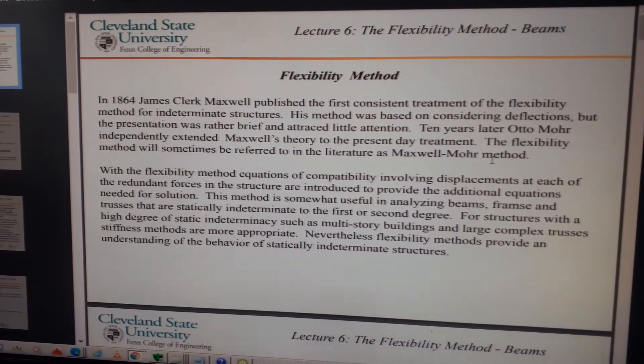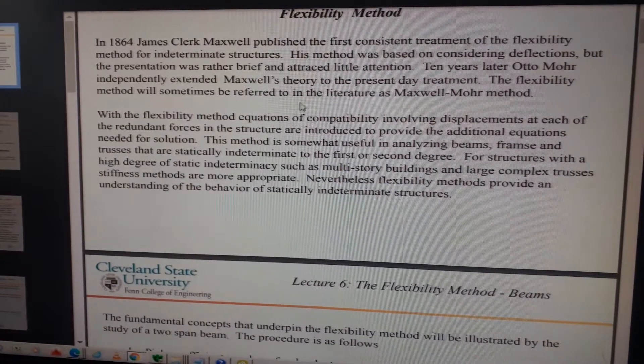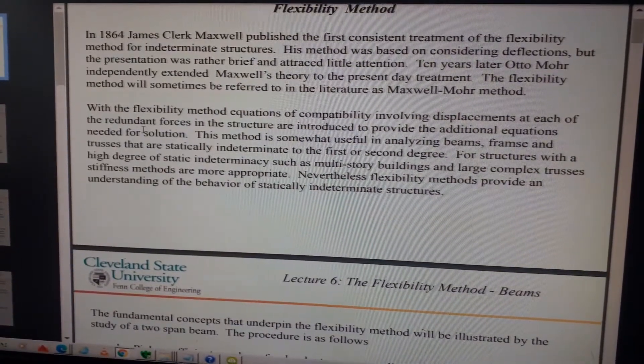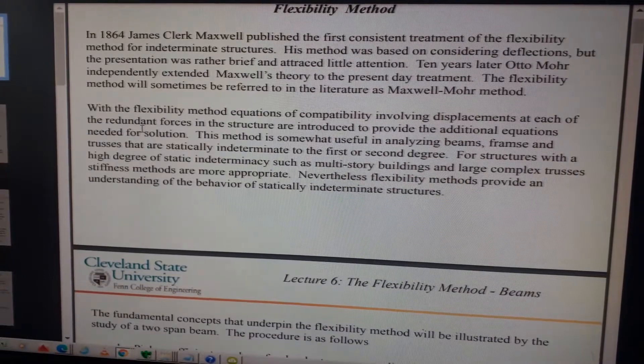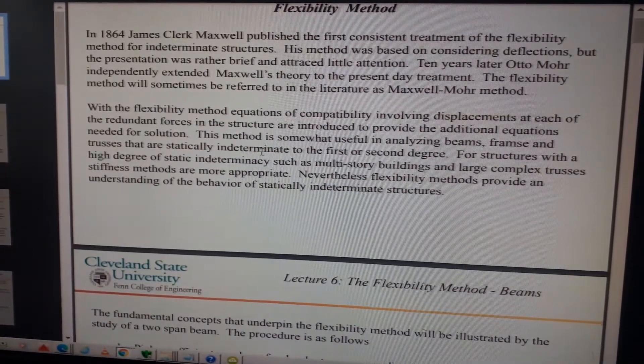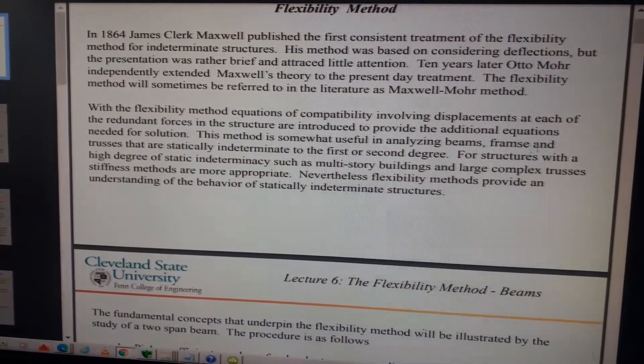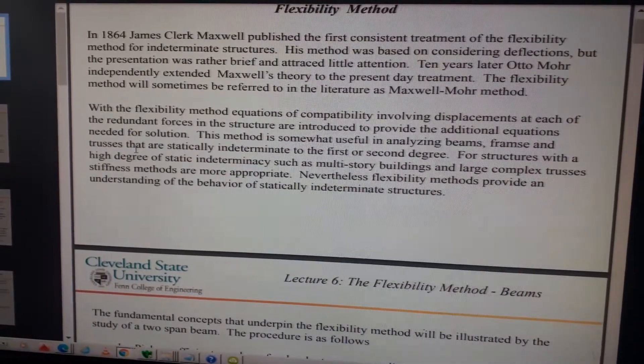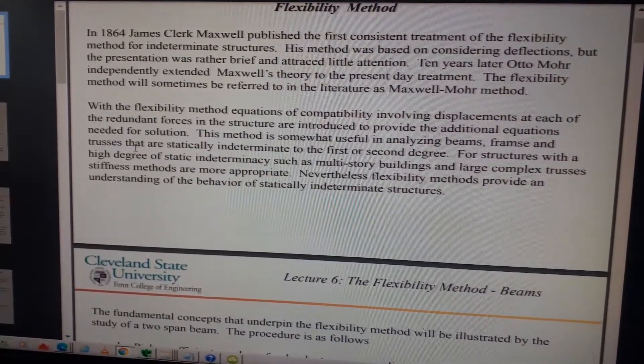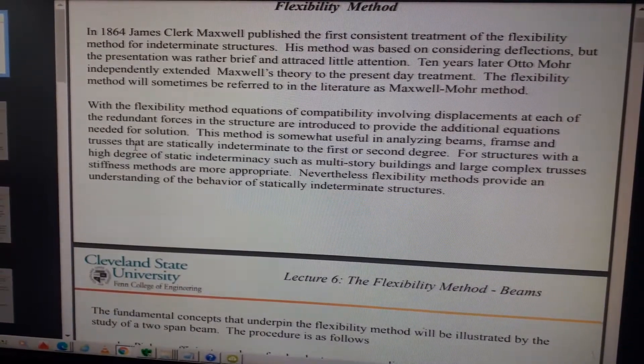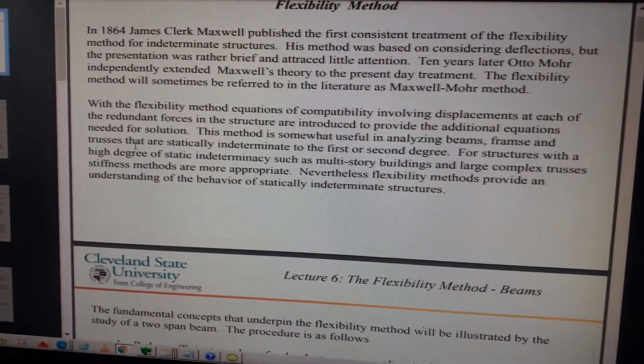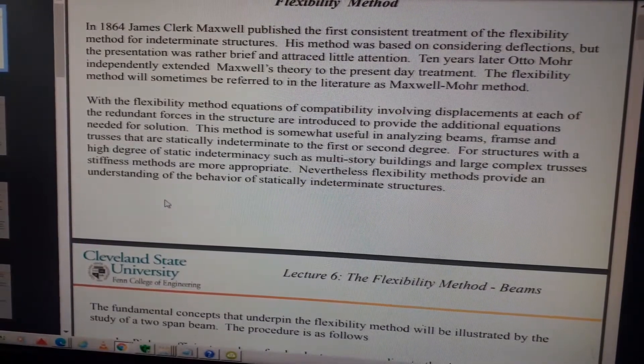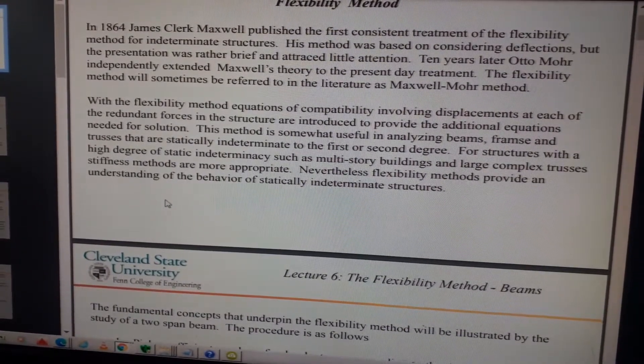The flexibility method will sometimes be referred to in the literature as the Maxwell-Mohr method. With the flexibility method, equations of compatibility involving displacements at each of the redundant forces in the structure are introduced to provide the additional equations needed for solution. This method is somewhat useful in analyzing beams, frames, and trusses that are statically indeterminate to the first or second degree. For structures with a high degree of static indeterminacy, such as multi-story buildings and large complex trusses, stiffness methods are more appropriate. Nevertheless, flexibility methods provide an understanding of the behavior of statically indeterminate structures.